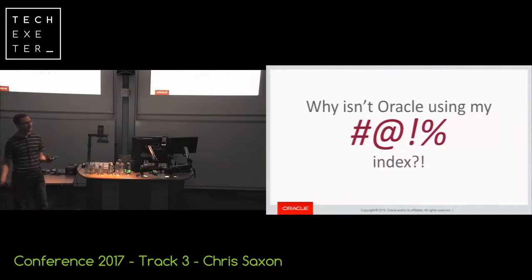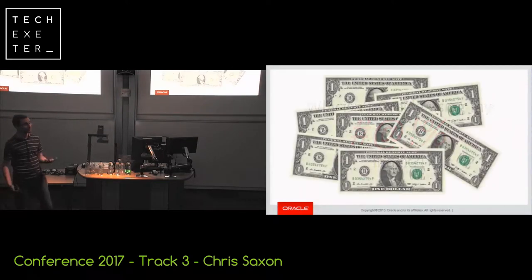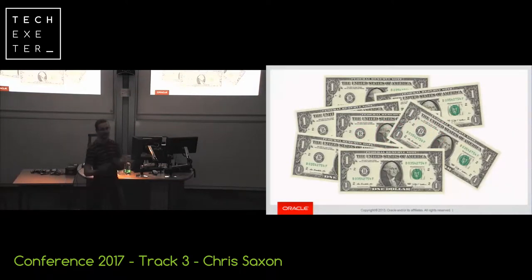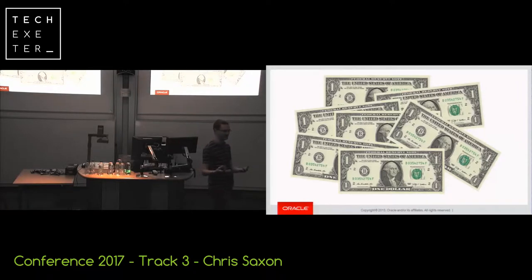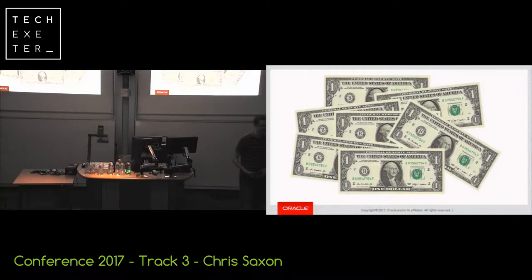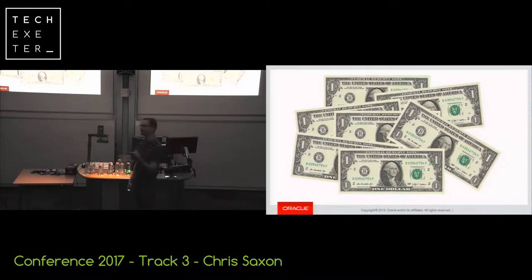The reason comes down to what we call the cost. You submit the query to the database and the cost-based optimizer assigns it a cost — the cost of not using the index is lower than the cost of using it. What I'm going to do in the rest of this talk is explain some of the factors and reasoning behind that cost: what makes an index more expensive than a full scan and vice versa.